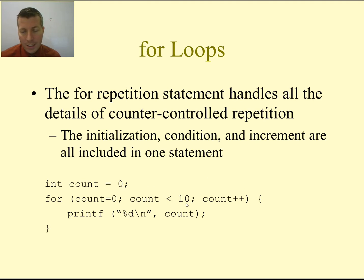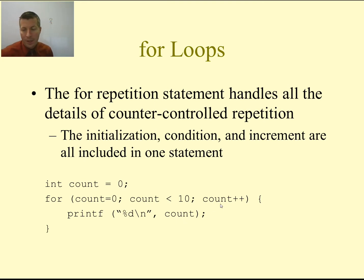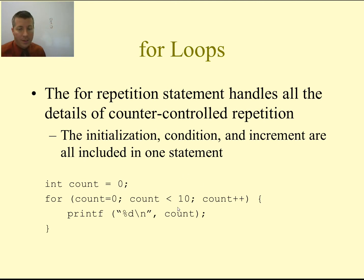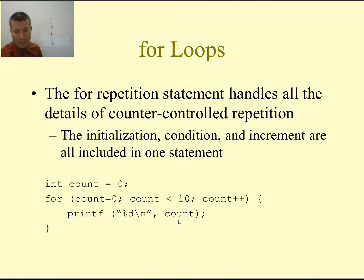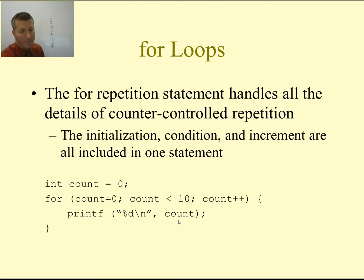We check if one is less than 10 — it is — we print one. We increment to two, check, print two. We increment to three, check, print three. Jumping forward: after printing eight, we increment to nine, check if nine is less than 10 — it is — so we print nine. We then increment nine to 10, check if 10 is less than 10 — it is not — so we break out of our for loop and execute the very next line of code. We print out the values from zero through nine inclusively; we do not print out 10.